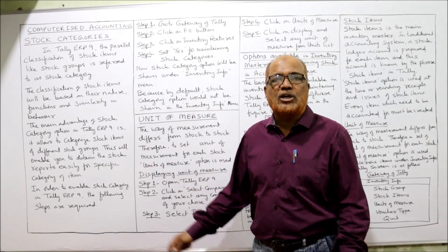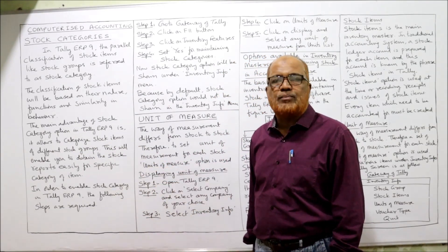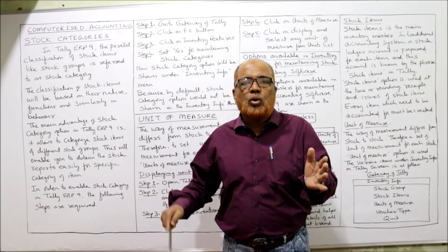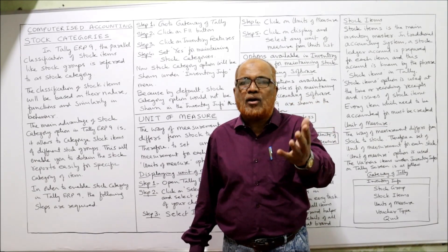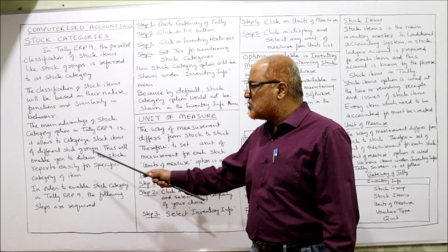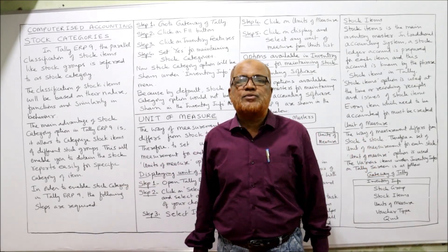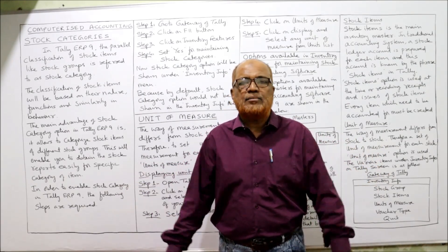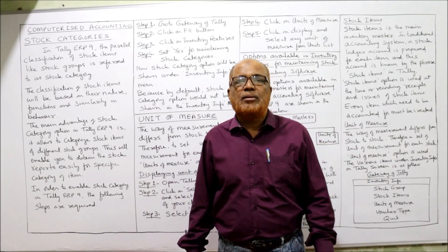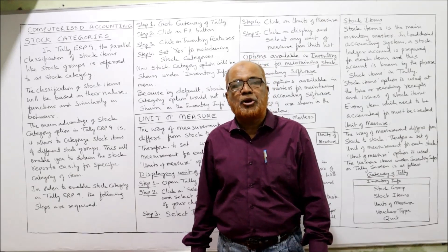The main advantage of the stock category option in Tally ERP 9 is it allows categorizing stock items into different groups based on their nature, behavior, functions, and similarities. A business organization may be engaged in different types of stock items, and not all inventory items are the same. With categorization, we can make specific reports for each different item of stock easily — that is the main advantage.